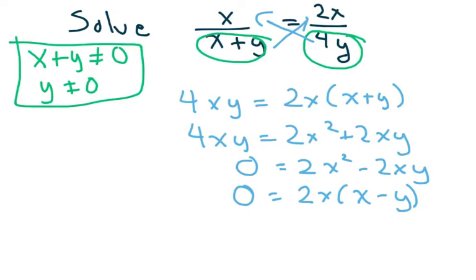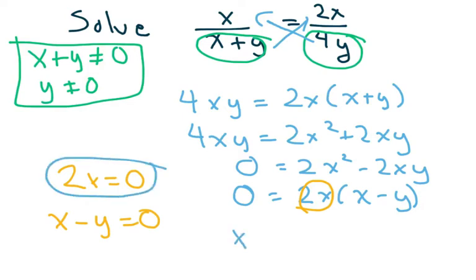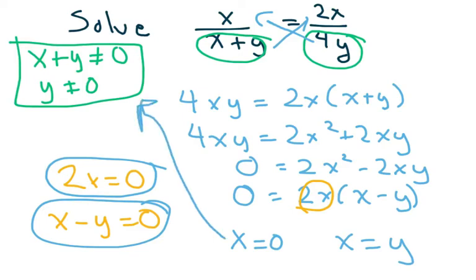So I'm going to take both pieces. We have 2x equals 0 and we have x minus y equals 0. So in this case, this is just x equals 0. And in this case, we have x equals y. Since both of these aren't involved with our restrictions on the domain, that means these are our answers.